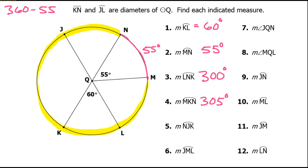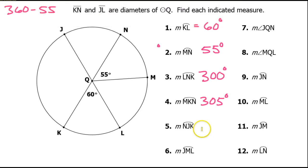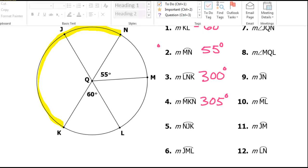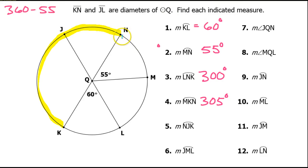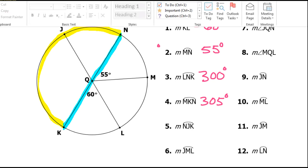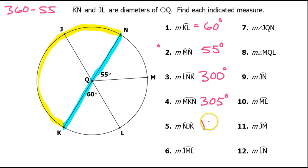Problem number 5: arc N, J, K. There's N, there's J, there's K — so here is arc NJK. Hopefully you can see right away that segment NK is a diameter of the circle, so this is a semicircle. Of course, that's 180 degrees. Easy.